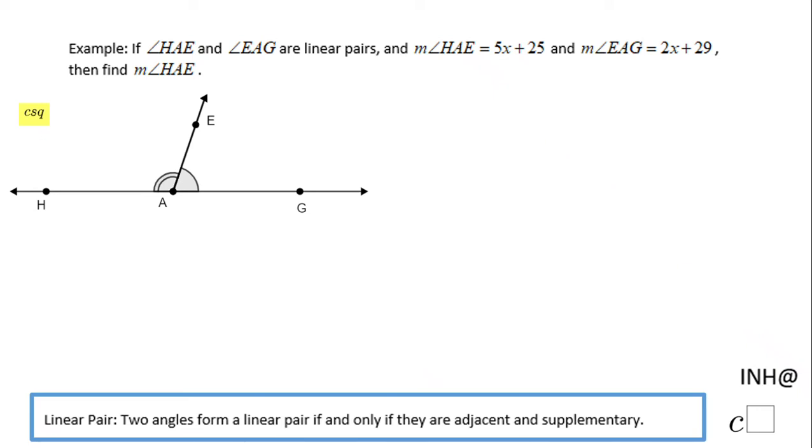Welcome back at I Need Help at C Square. In this example we have a pair of angles which are linear pairs. What is a linear pair? Two angles form a linear pair...